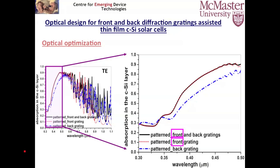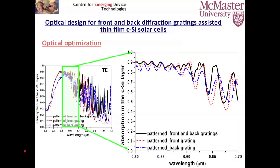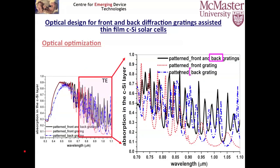Zooming in on these three regions: in the short wavelength range, the stack with the front grating (black and dot-red curves) shows higher absorption than the stack without the front grating, thanks to the anti-reflection effect of the front grating. In the middle wavelength range, there are several regular absorption peaks due to Fabry-like resonances. In the long wavelength range, the stack with the back grating shows multiple absorption peaks compared to the stack without the back grating, thanks to the back grating diffraction effect.